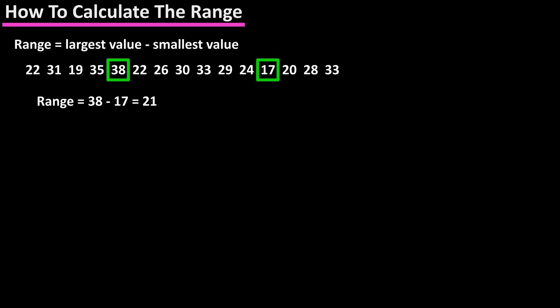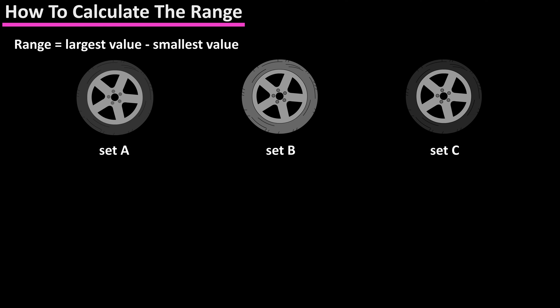The range is a statistic that gives us a way to look at things. For instance, if you were looking to buy new tires for your car and there were three different sets available to you at the same price.